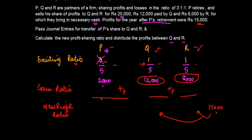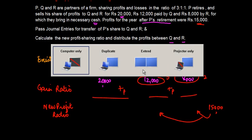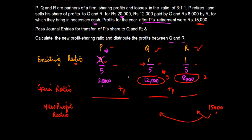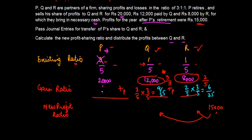Q and R bought twelve thousand and eight thousand rupees worth respectively. The ratio of these two numbers is 3:2. So effectively, Q will get 3/5 and R will get 2/5 of P's share. P's share was 3/5, so Q gets 3/5 of 3/5 which is 9/25, and R gets 2/5 of 3/5 which is 6/25.